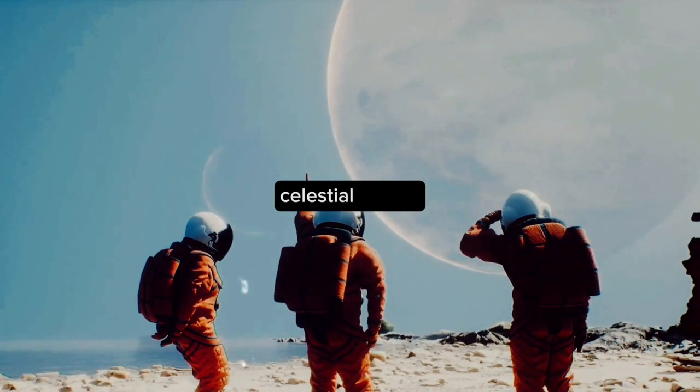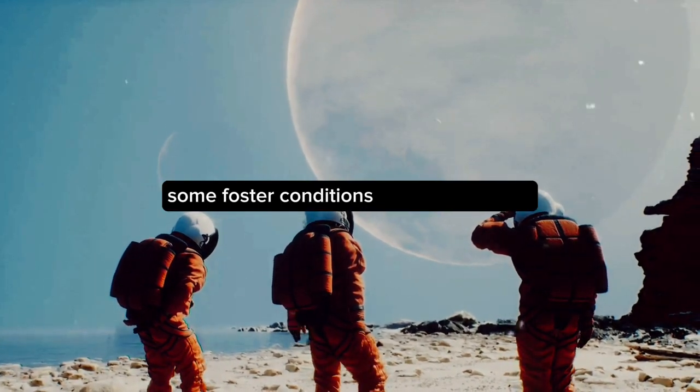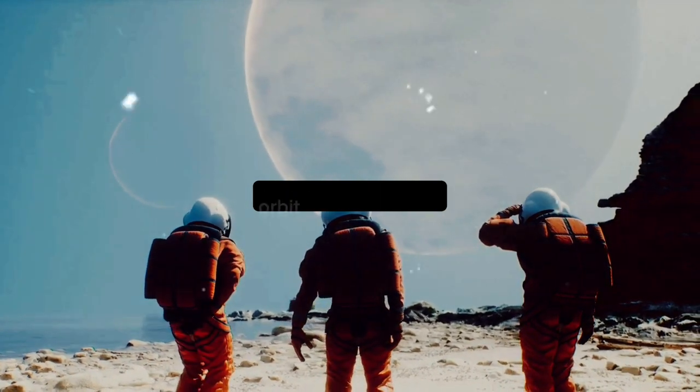Planets, wandering celestial bodies, journey around their parent stars. Some foster conditions necessary for life as we know it. Earth, nestled in a cozy orbit around the sun, provides a hospitable environment for life.